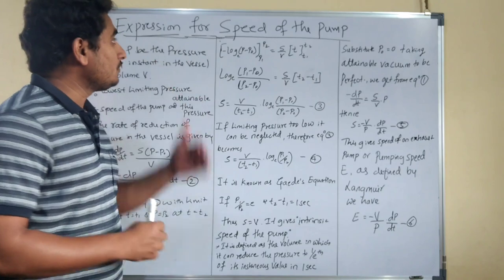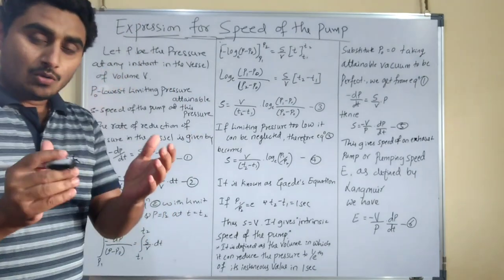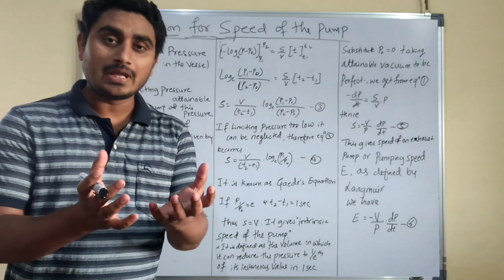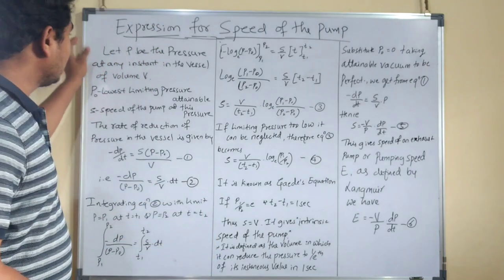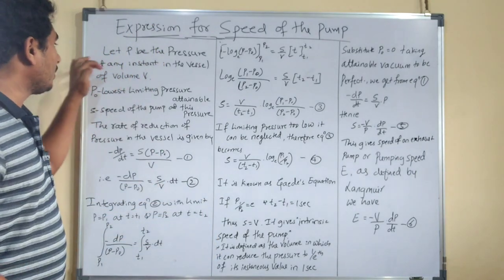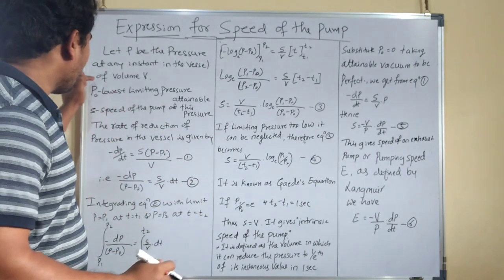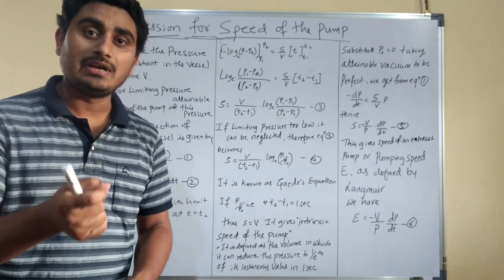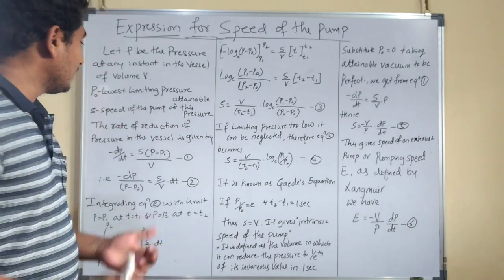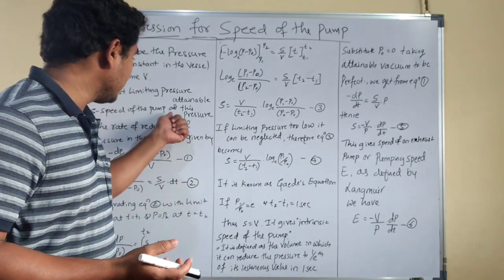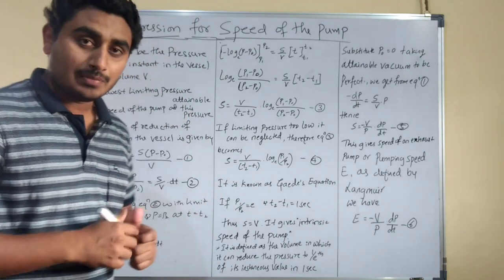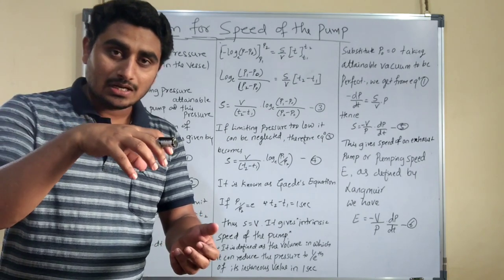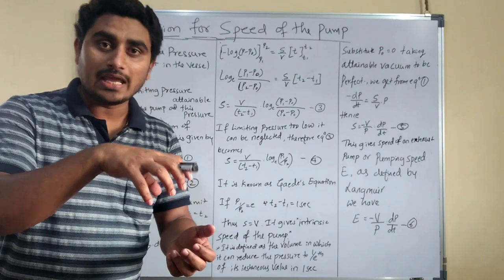Next is an expression for the speed of the pump. Consider a vessel containing a gas with pressure P and volume V. Let P be the pressure at any instant in the vessel of volume V, P0 be the lowest limiting pressure attainable, and S be the speed of the pump at this pressure. The vessel is connected to the pump, from which we remove the gas with the help of the pump.